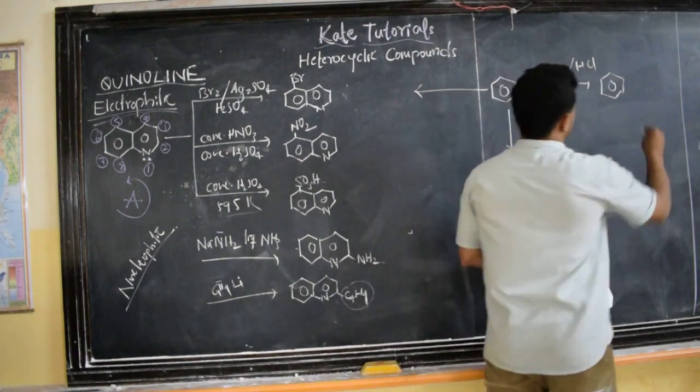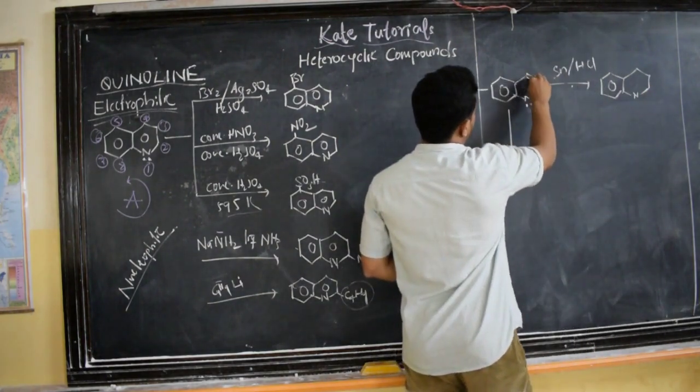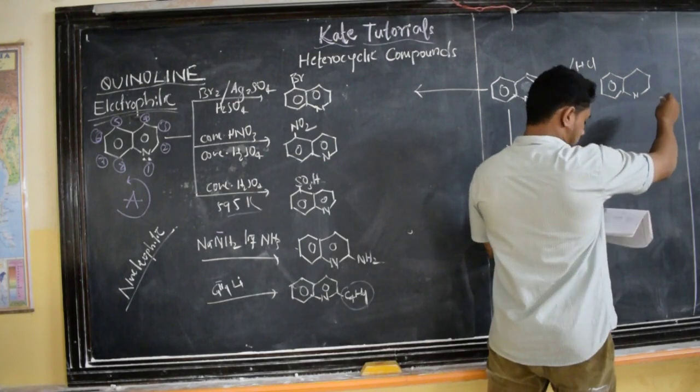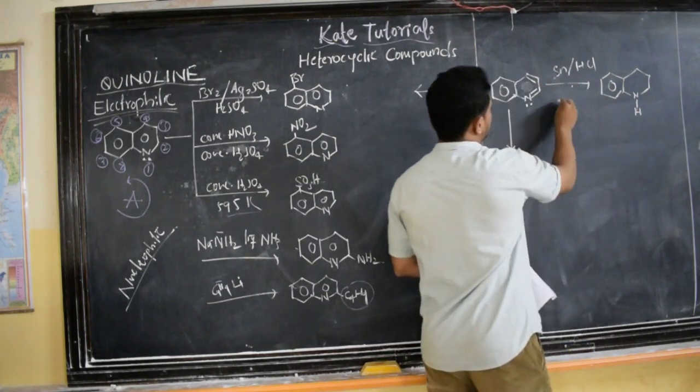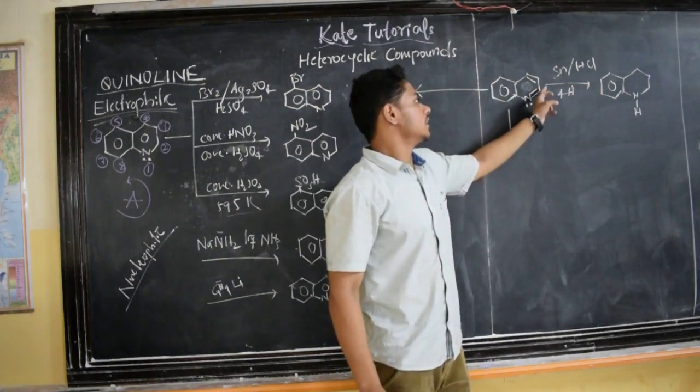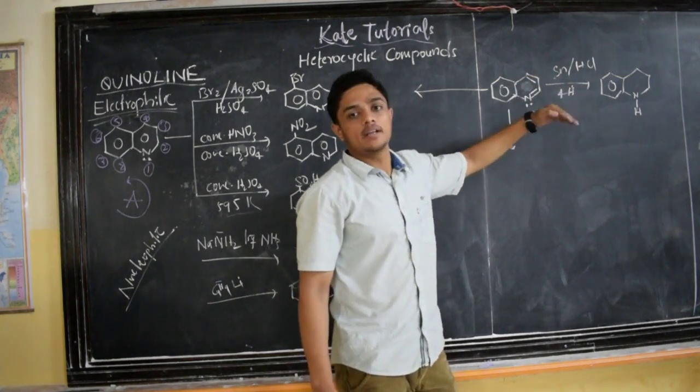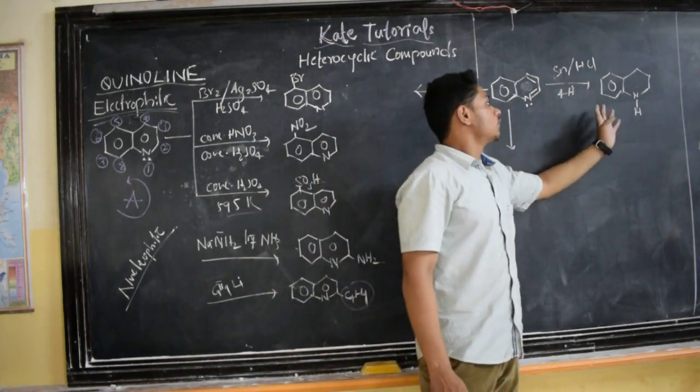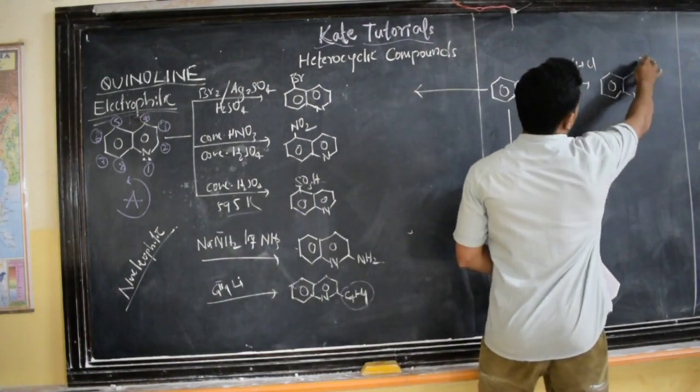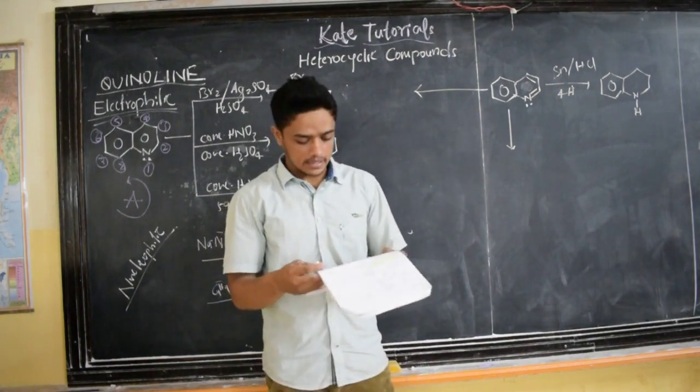When we use Sn/HCl as a mild reducing agent, initially I had double bonds here. Two double bonds—five pi bonds total. But now two double bonds are going to be eliminated. Sn/HCl is going to give four hydrogens—one hydrogen will attack here, another here, another here, and another here. So the four pi bonds are going to be eliminated, giving tetrahydroquinoline—1,2,3,4-tetrahydroquinoline.